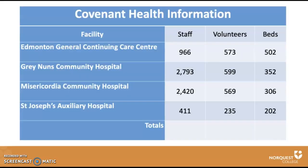Now take a look at this table. This table is set up to compare the number of staff, volunteers, and beds in different Covenant Health hospitals in Edmonton. Take a look at the staff column. Which hospital has the most staff? The Grey Nuns Hospital has the most staff. Which hospital has the least staff? St. Joseph's has the least staff.